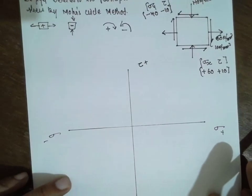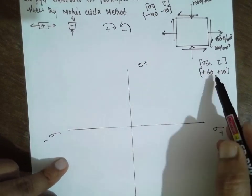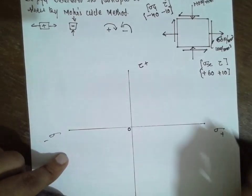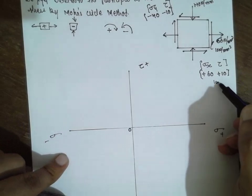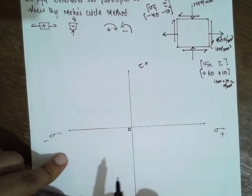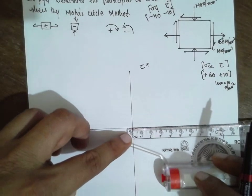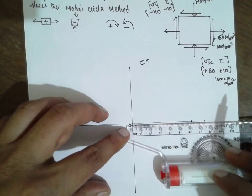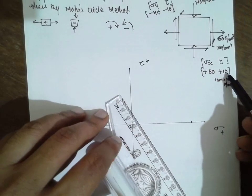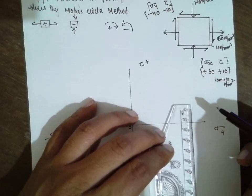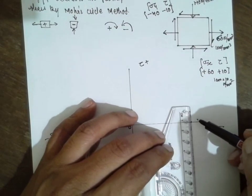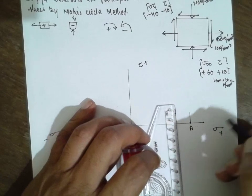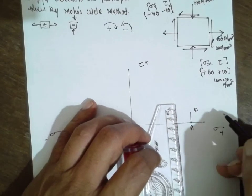Now, based upon the above figure, sigma x is 60 Newton per mm square. I will consider the scale: 1 centimeter is equal to 10 Newton per mm square. From O, I will go 6 centimeters. Next, tau is plus 10, which is 1 centimeter, exactly 90 degrees. This is point A with tau 10. First point is completed.